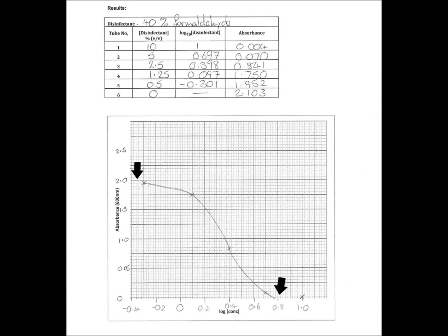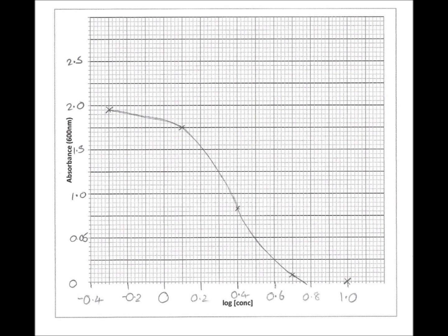The last thing to plot on your graph is the maximum value that the bacteria you inoculated with can grow to in the conditions that you've given them. So that's tube number six, where you've got no disinfectant. Now we worked out earlier that we can't work out a log to the base 10 of zero, so we can't plot it as a point on the graph. So what I've done is I have drawn a line across the top of the graph and labeled it maximum.